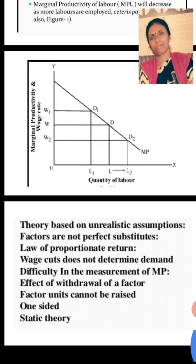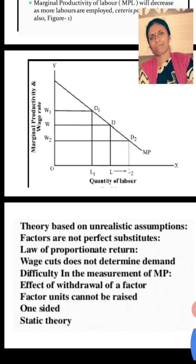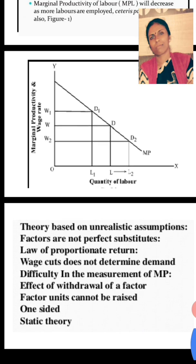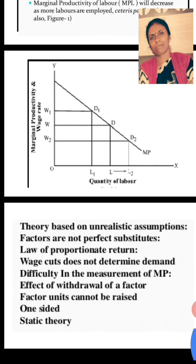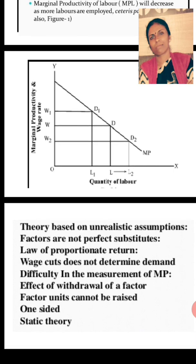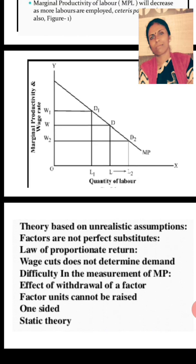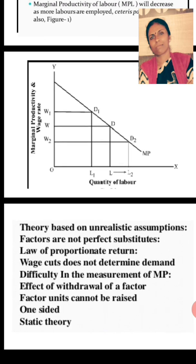The theory is criticized on the following grounds. First, factors are not perfect substitutes — although we assumed substitution is possible, in reality factors are not perfectly substitutable. Second, the law of proportional returns is not always applicable. Third, wage cuts are not determined solely on the basis of demand. Fourth, there is difficulty in the measurement of marginal productivity. Fifth, factor units cannot be withdrawn easily. The theory is also static — it assumes population and technology remain constant, which is not possible in practical life.